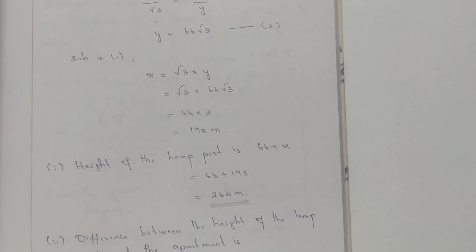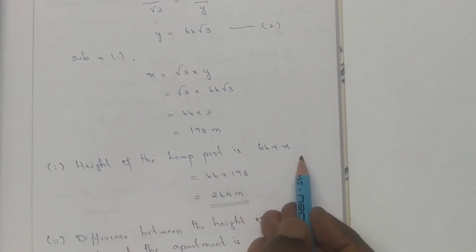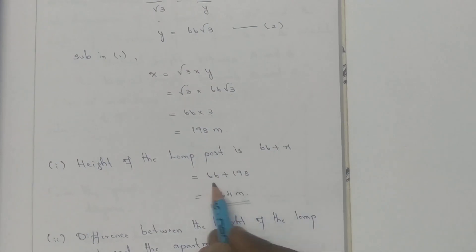The first question is the height of the lamp post: 66 plus X equals 66 plus 198, which is 264 meters.